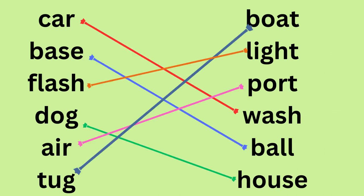Compound word answers for page one are: car wash, baseball, flashlight, doghouse, airport, tugboat.